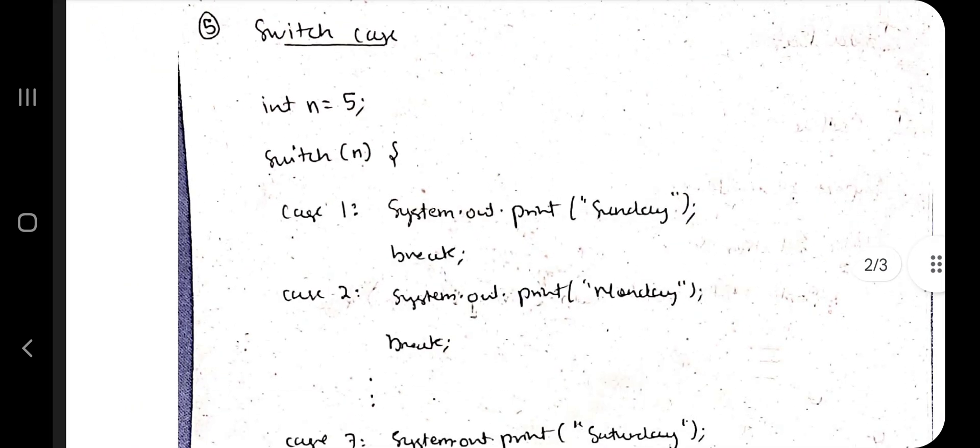The next thing which you need to know is the switch case. Suppose that I have a number here, n equals 5, so I want to print that day which is associated with the number 5. For that, what I will do - I will write a case and the number I will be writing here.